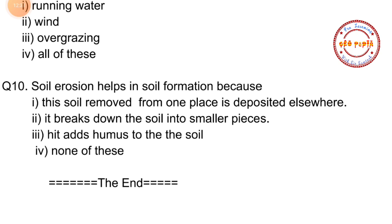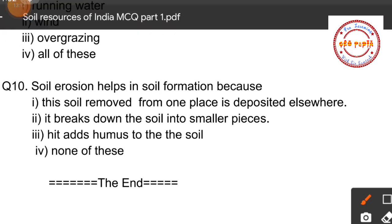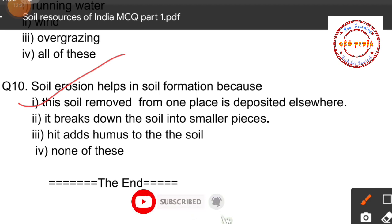Question number ten: Soil erosion helps in soil formation because — option one: the soil removed from one place is deposited elsewhere, option two: it breaks down soil into smaller pieces, option three: it adds humus to the soil, option four: none of these. The correct option is option one — soil erosion removes soil from one place and it gets deposited elsewhere, thus helping in soil formation. That's all for this part; see you in part two!